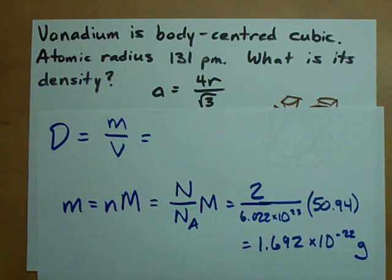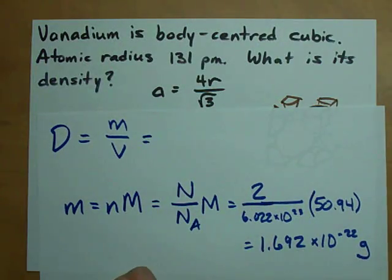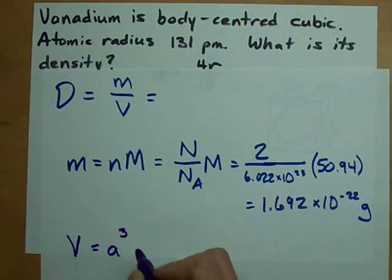So once we do that, all we need now is the volume of one unit cell. Well, the volume of one of these unit cells is equal to the edge length cubed.